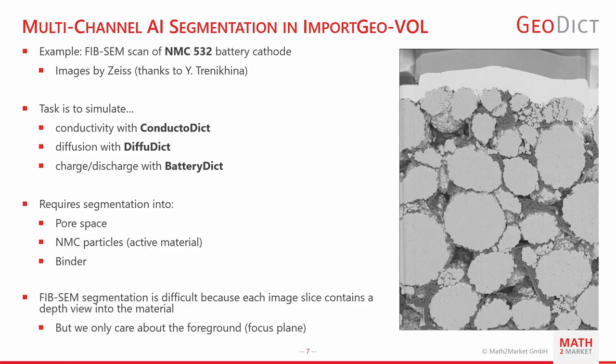Next we have multi-channel segmentation in Import GeoWall. Here we have as an example a FIBSEM scan of an NMC532 battery cathode, thanks to Zeiss. The task was to simulate conductivity with ConductoDict, diffusion with DiffuDict, and discharge cycles with BatteryDict. For this we needed to segment the images into pore space, the NMC particles which are the bright, large grey particles, and the binder which is the dark grey material in between the particles.